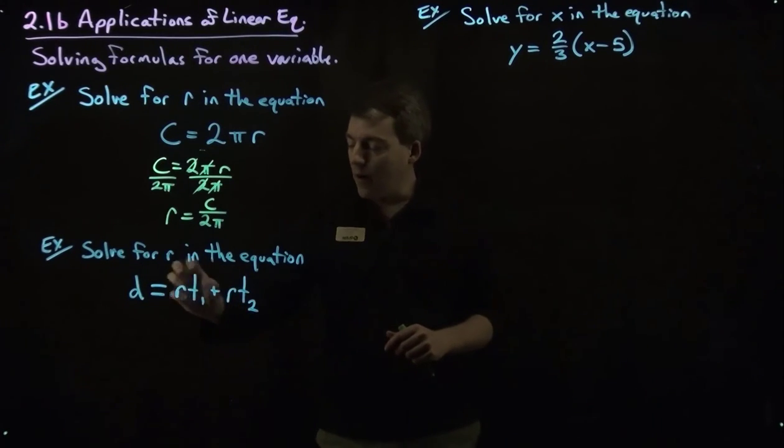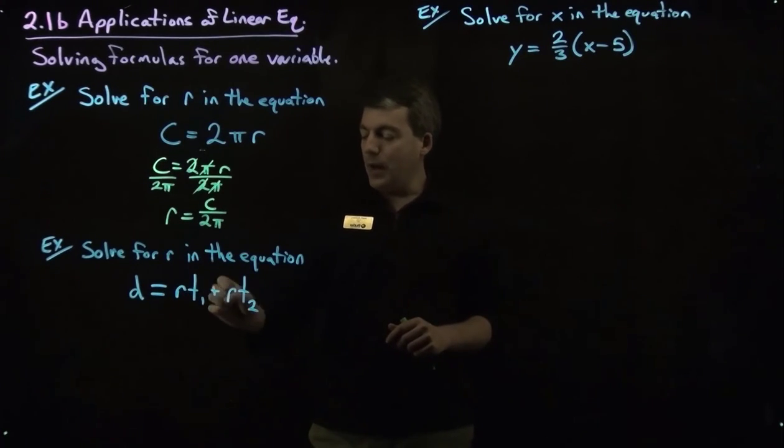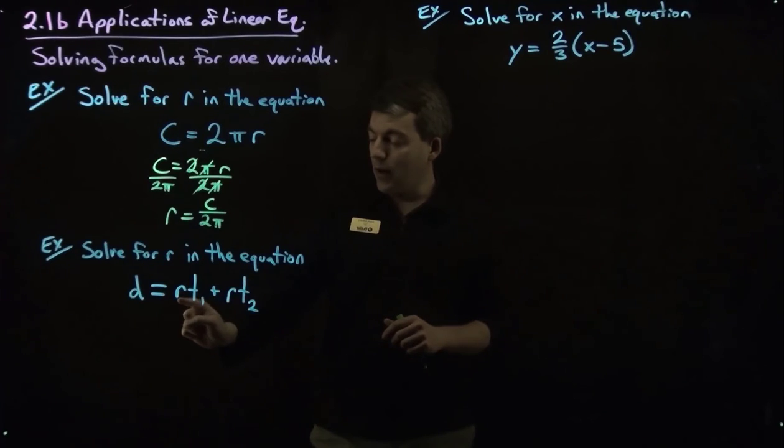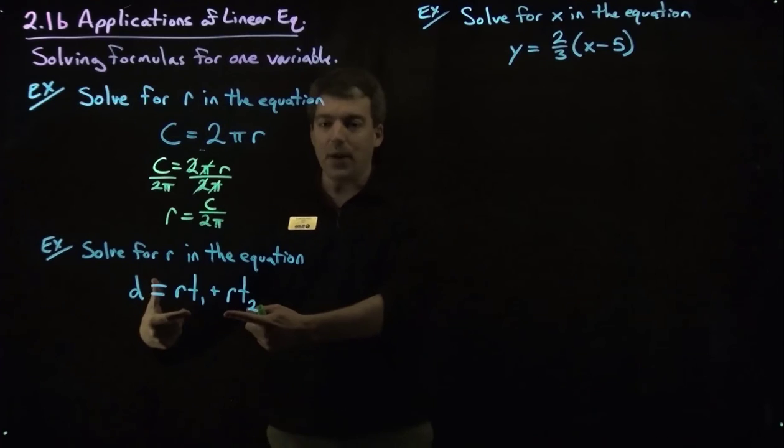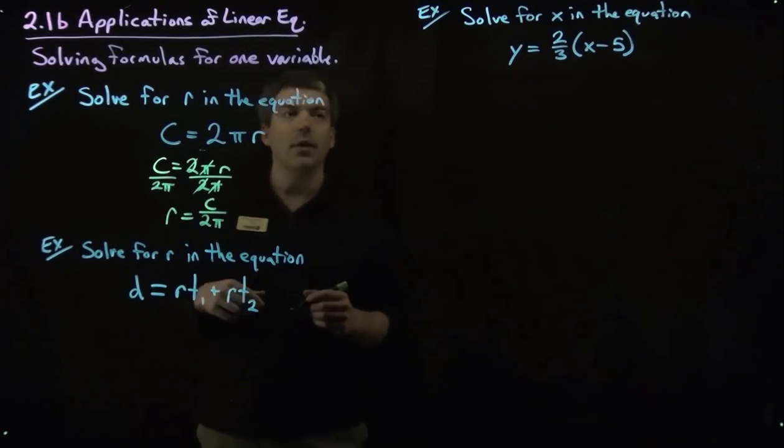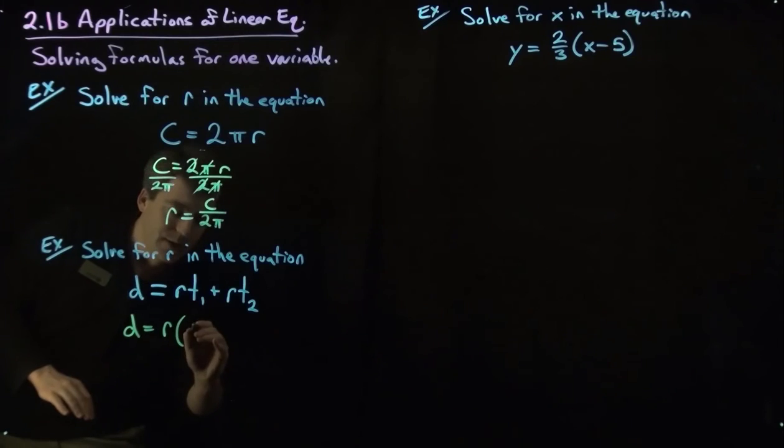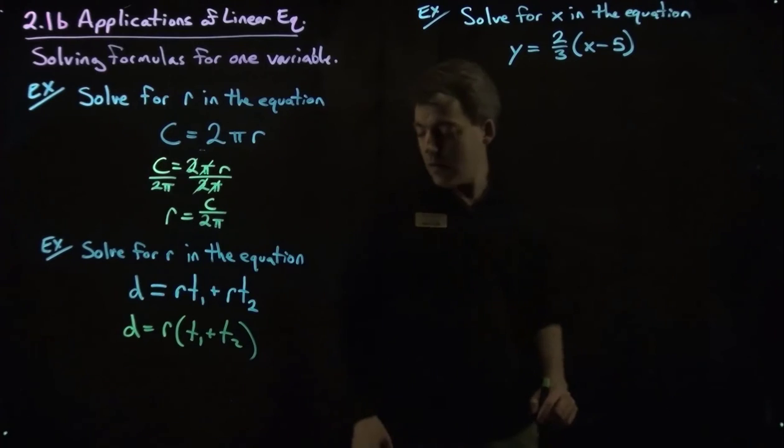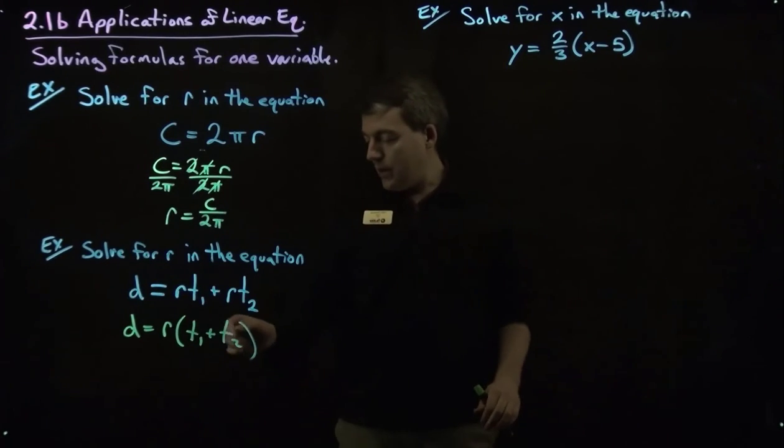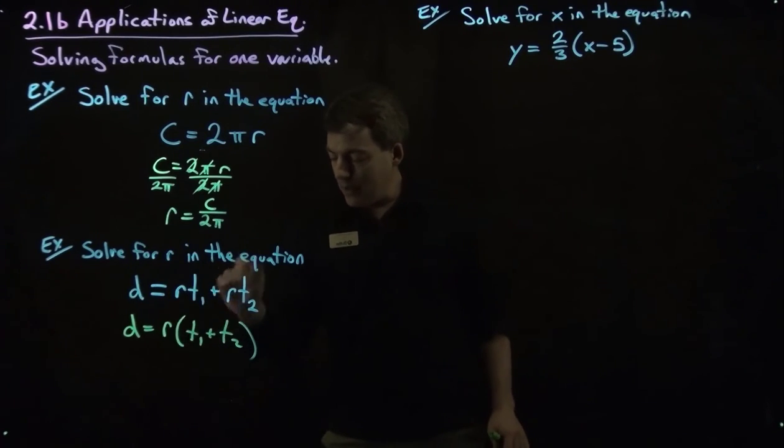Okay, something we need to do we need to get the r alone as one thing by itself and to do that we're going to use factoring. So we've got an r times t1 plus an r times t2. Both of these terms have a common factor of r. So what we'll do is we'll factor that out. So we'll be very careful about this. So d equals r times t1 plus t2. So I've taken a factor of r and factored out of both terms in the sum, written it like this.